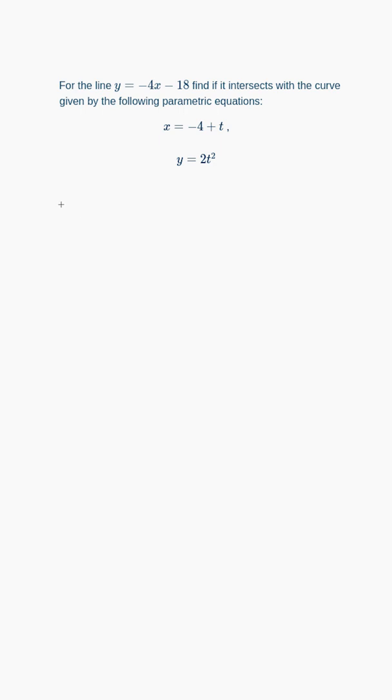So if y is 2t squared, putting that into the Cartesian equation at the top, I'm going to get 2t squared equals minus 4x, which is minus 4 plus t, minus 18.